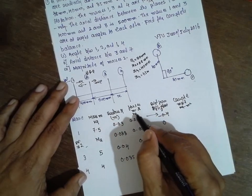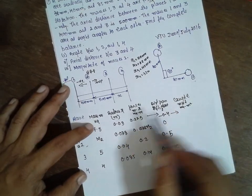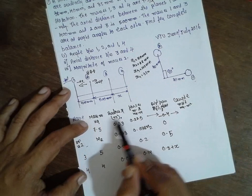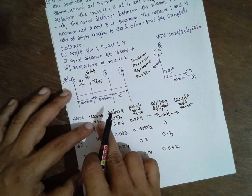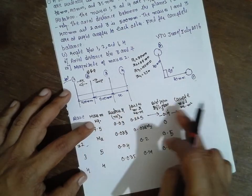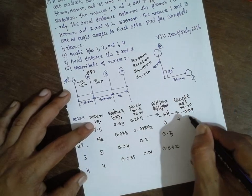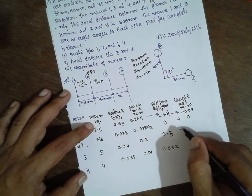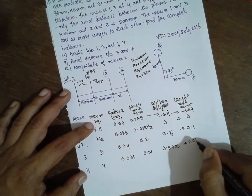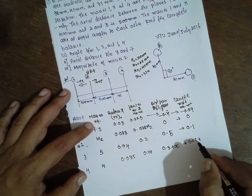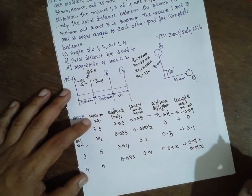Now for the couple column (M·R·L): the values are −0.09, 0 (for reference plane), 0.1, and (0.07 + 0.14X) for plane four.